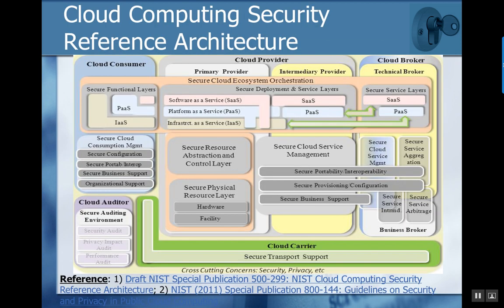This is a NIST guideline for cloud computing security — a complicated chart, but really a guideline of NIST's definition of what cloud computing should look like from a security perspective. You might see familiar terms like software as a service, platform as a service, and infrastructure as a service. This is a conceptual model of what a cloud should have in terms of security — not necessarily an implementation — but if you look at AWS or similar services, you'll probably see something that resembles this. These represent best practices for a secure cloud.